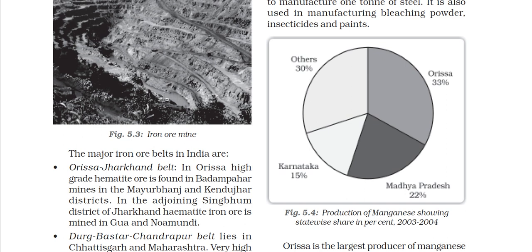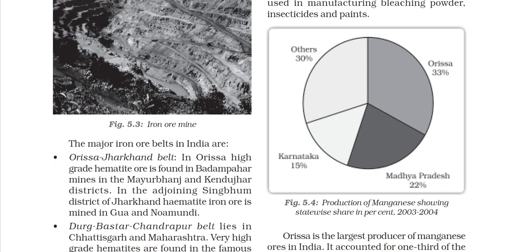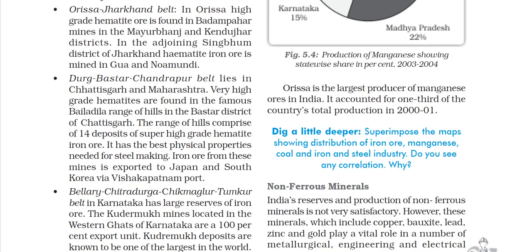The production of manganese by state-wise share shows: Odisha 33%, Madhya Pradesh 22%, Karnataka 15%, and others 30%. Odisha is the largest producer of manganese all over India, accounting for one-third of the country's total production as of 2001.